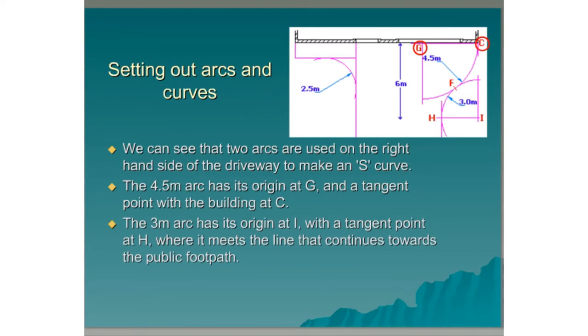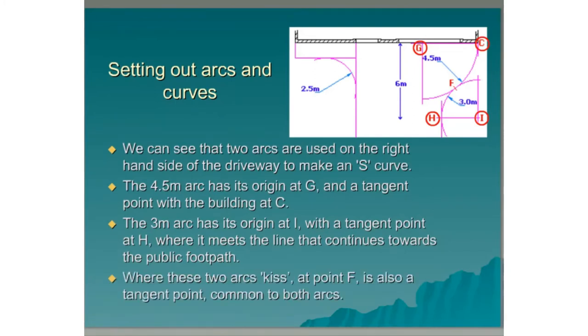The 3 metre arc has its origin at I with a tangent point at H where it meets the line that continues towards the public footpath. Where these two arcs kiss at point F is also a tangent point common to both arcs.